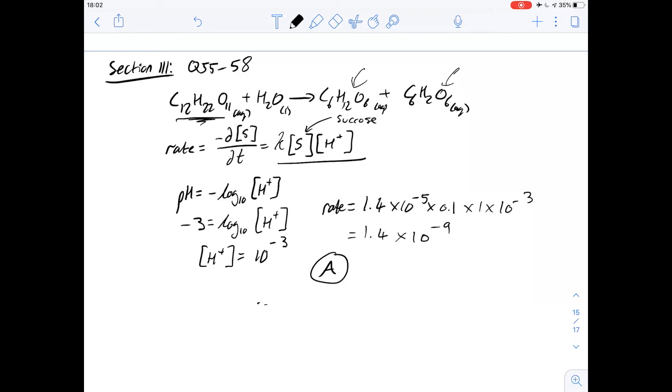But of course, as one decreases, the other will increase as sucrose is converted into glucose and they'll have the opposite sign. Therefore, the answer for 56 is going to be B.